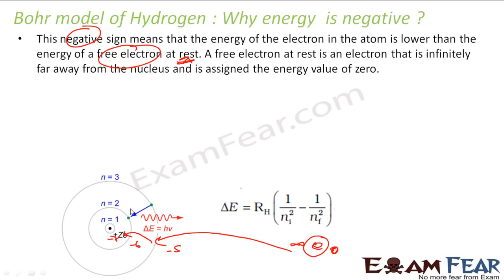So we cannot assume the energy to be zero at the orbit level. What we are doing is assuming the energy is zero at infinite distance. Please note — we are assuming it is zero, it is not actually zero. We are assuming it for the convenience of our calculations.